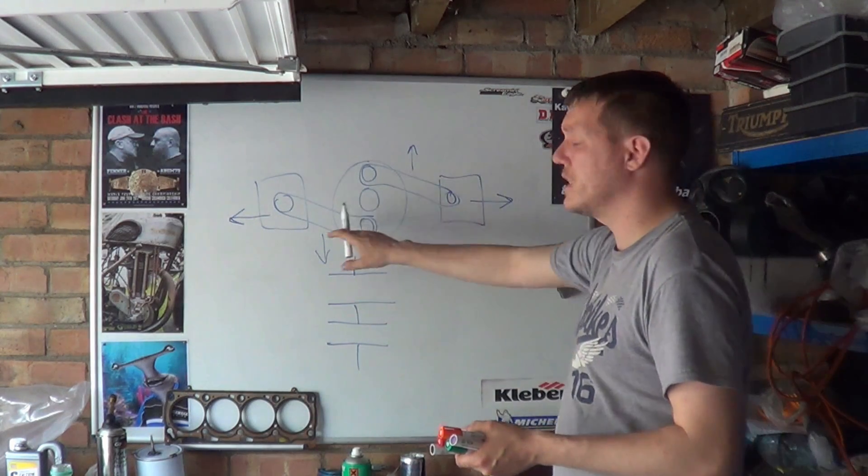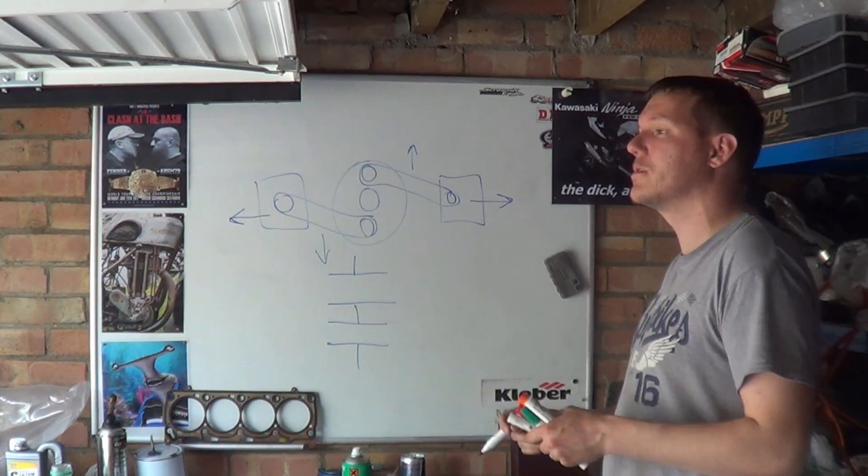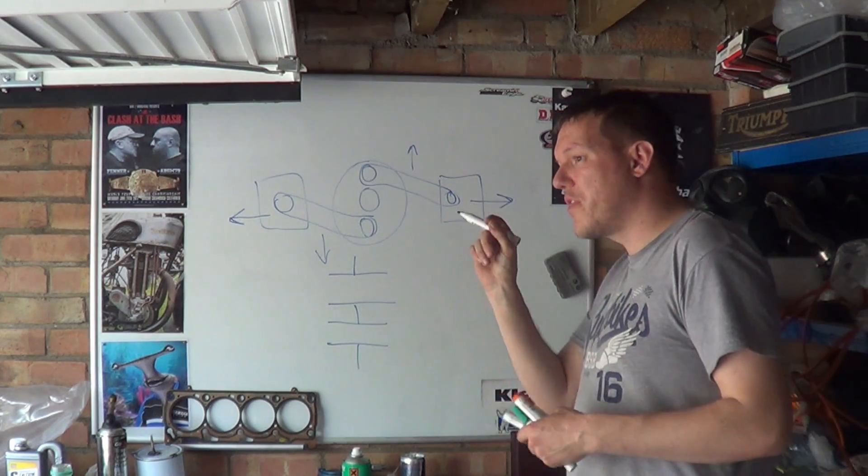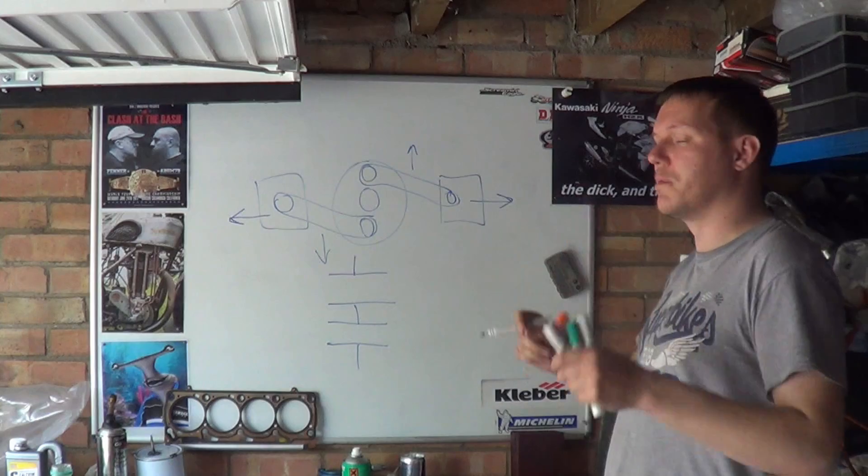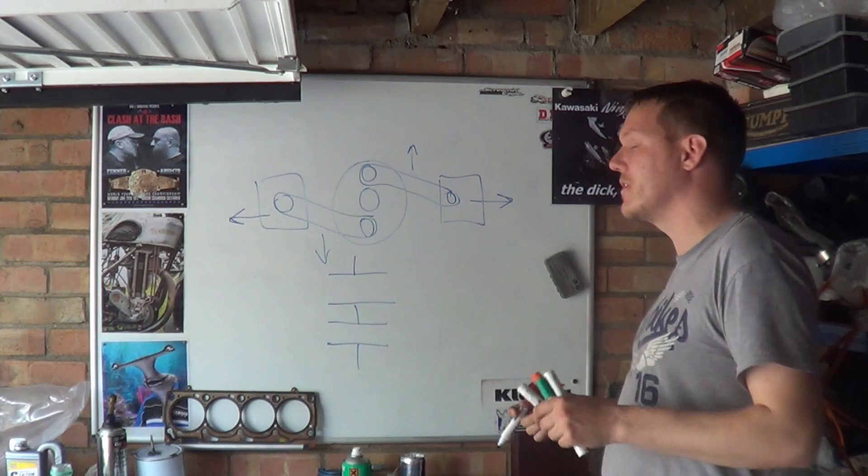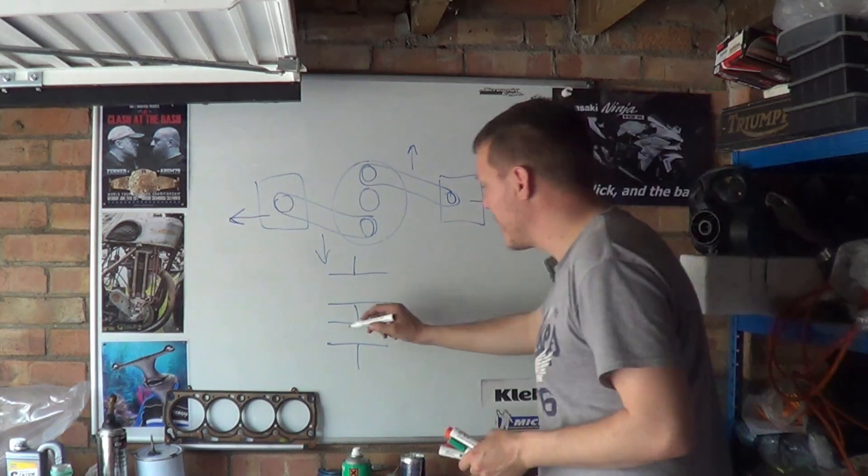But the reason why the webs are so thin is because of this primary balance, because they don't have to use counterweights to balance that out. They can make the webs thinner just to deal with the stresses, the torsional stresses, the twisting and all the rest of it.